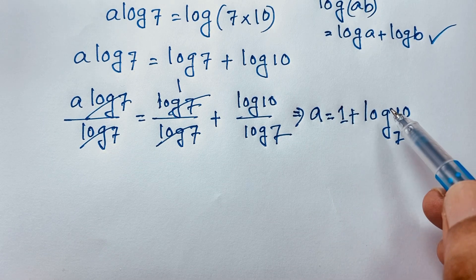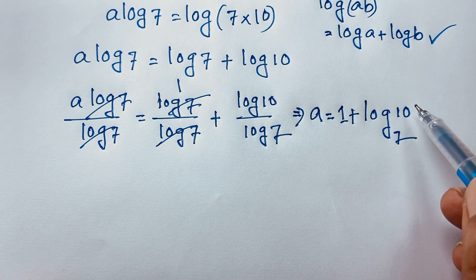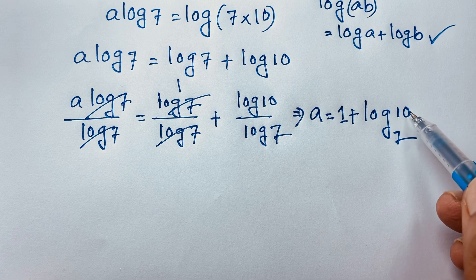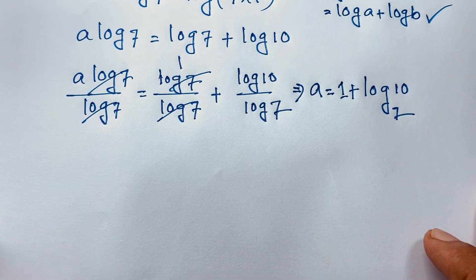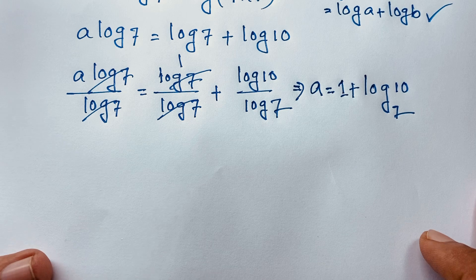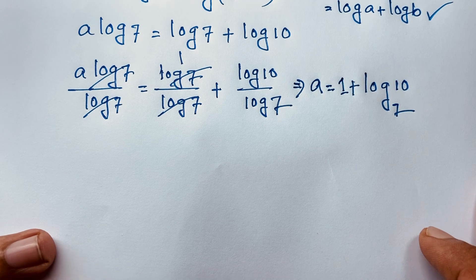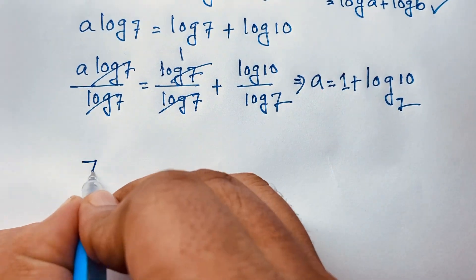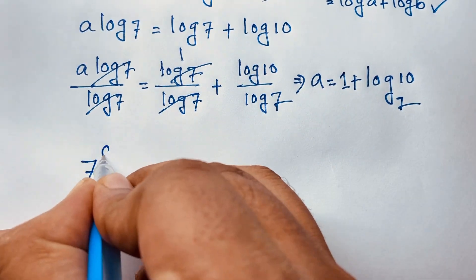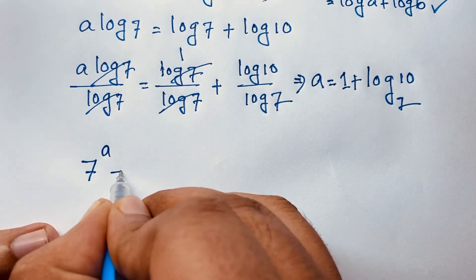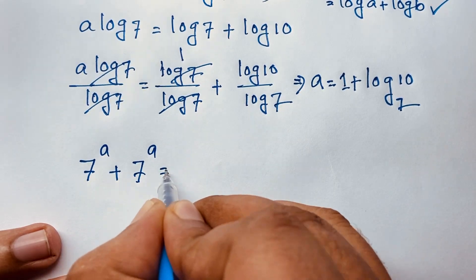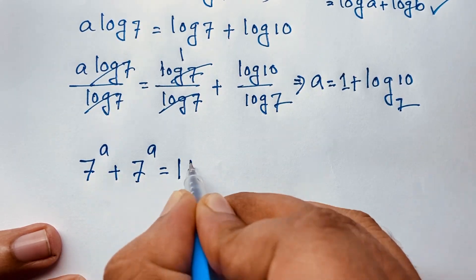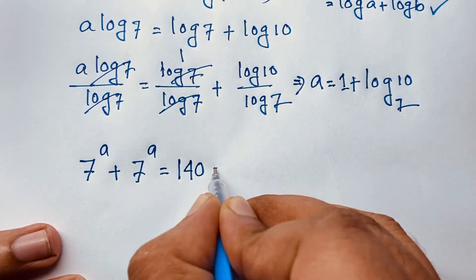So the final answer is a equals 1 plus log(10/7). Now let's verify our answer by substituting back into the original equation: 7 to the power a plus 7 to the power a equals 140.